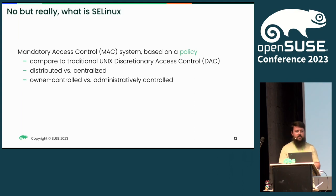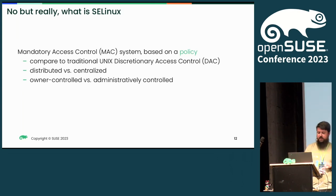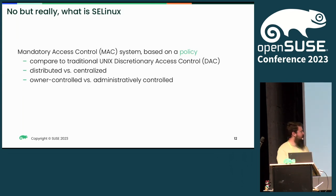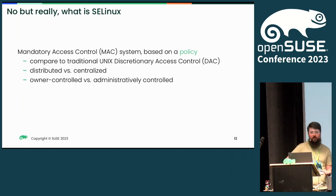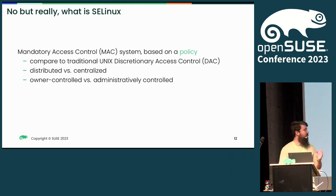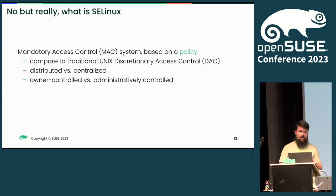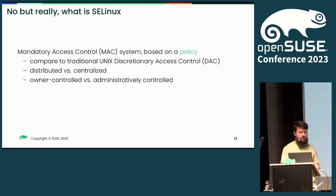Another difference from traditional Unix DAC is that access control is controlled by the owner — you own a file, you decide who can do what. You're free to shoot yourself in the foot; you can set your SSH private key to public and do it. In SELinux, however, the policy is set by the administrator and you can't change it. The administrator will have thought, for example, to not allow SSH private keys to be read by the general public — so you can never do that.